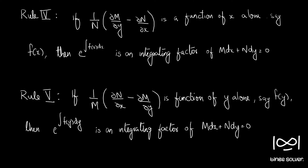So these are the two new rules. Our given equation is M dx + N dy = 0. When we check ∂M/∂y = ∂N/∂x, which is the necessary and sufficient condition for the differential equation to be exact, we will see cases where this is not equal. We have already found ∂M/∂y and ∂N/∂x, and we take their difference. If dividing that difference by N gives a function of x alone, then we apply Rule 4, and our integrating factor will be e raised to the integral of f(x) dx.